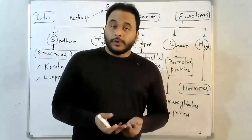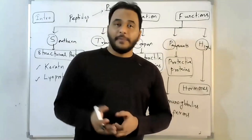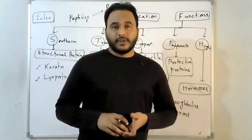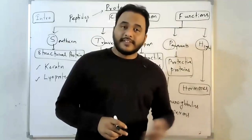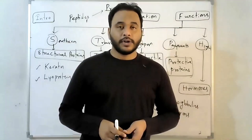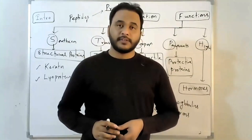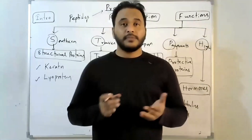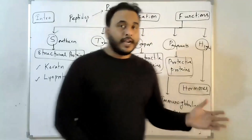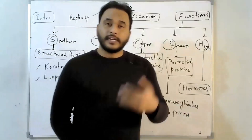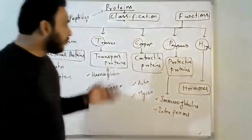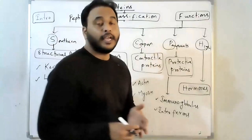Hormones are chemical messengers of the body involved in maintaining metabolic functioning. They are secreted by endocrine glands. Starting from hypothalamus, thyroid, thymus, pituitary, pineal, adrenal, parathyroid, pancreas, ovary, and testes — all are different endocrine glands with specific hormones that act on target organs and initiate different metabolisms. In this way, proteins help us in many ways.